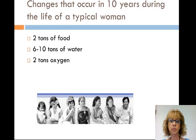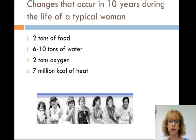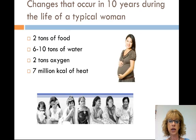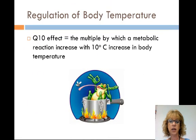If the woman produces two children during the 10-year span, she'll need to increase energy and material input about 5%. This is actually low because for other species it can be from 10 to 15%. Homeostasis is a budget of gains and losses — heat budget, energy budget, water budget, etc. They're all connected.